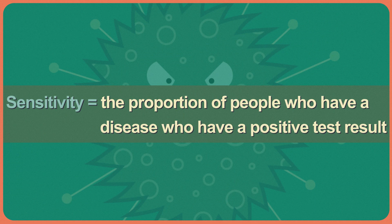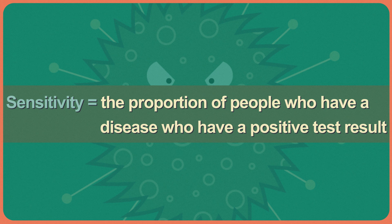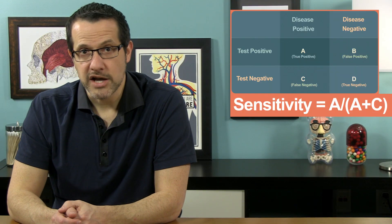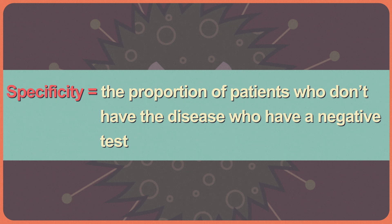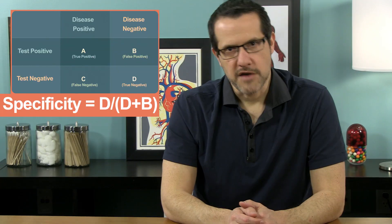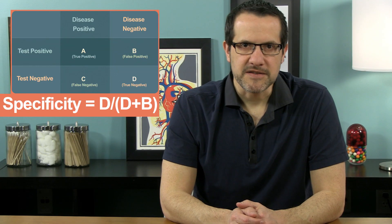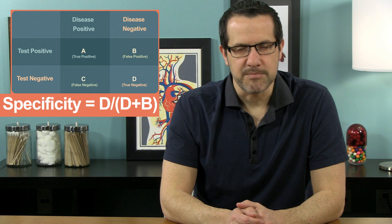Sensitivity is the proportion of people who have a disease who have a positive test result. It's the ratio of true positives to true positives plus false negatives. Referring to our diagram, sensitivity equals A over A plus C. Specificity is the proportion of patients who don't have the disease who have a negative test. It's the ratio of true negatives to true negatives plus false positives. Referring to our diagram, specificity equals D over D plus B.